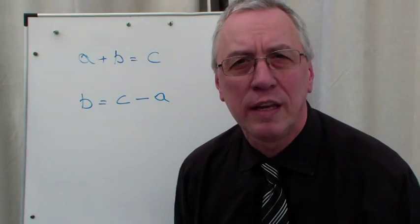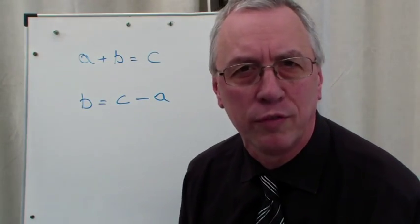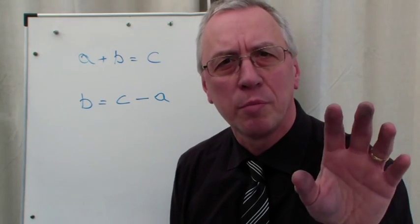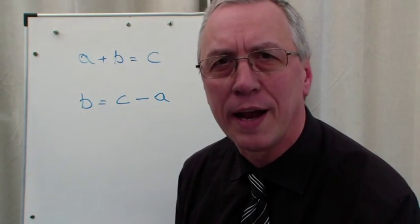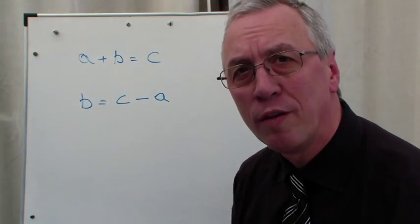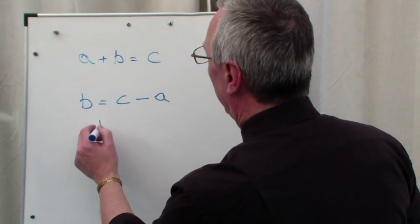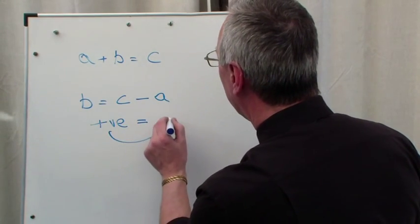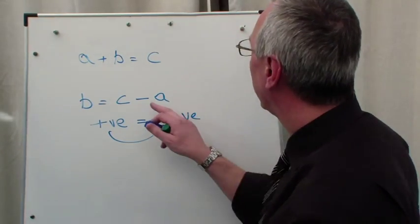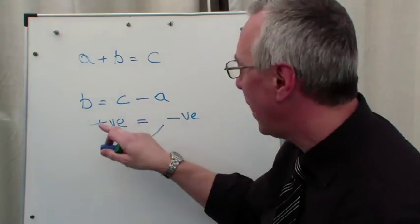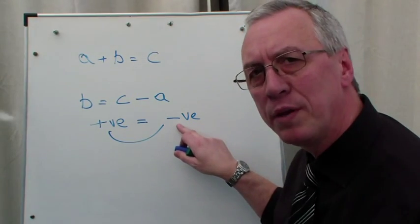So this is the second rule of transposition: when we move something across the equals sign, it becomes the opposite value to what it was before. So if it was a positive on the left-hand side and we move it across, it becomes a negative. As in this case here, plus a became minus a. The positive became the negative.